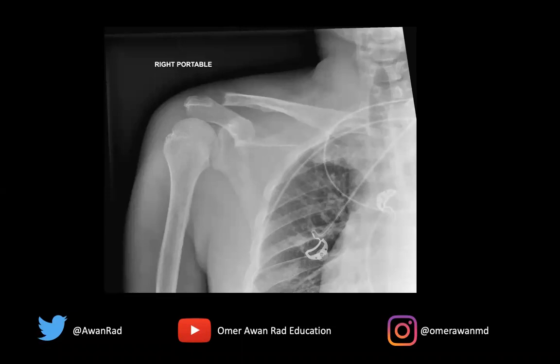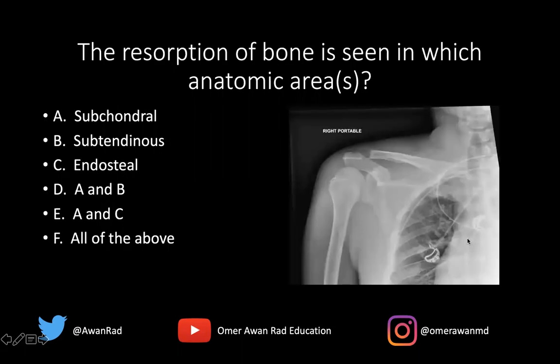Hello everyone, and welcome to MSK Unknown Case Series, case number 42. Here we have an interesting frontal view of the right shoulder, and I'll give you a second to ponder what you think the findings are. The question here is: the resorption of bone is seen in which anatomic area or areas? Is it subchondral, subtendinous, endosteal, A and B, A and C, or all of the above? I've purposely given you a lot of choices because I want you to really nail down exactly what this is.